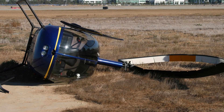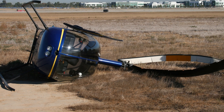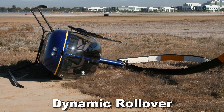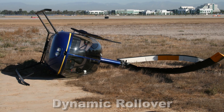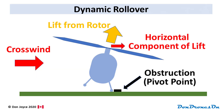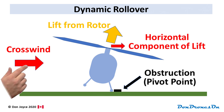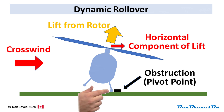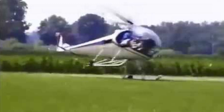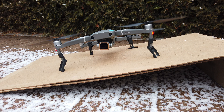The third helicopter hazard, which can also affect drones, is called dynamic rollover. Dynamic rollover occurs when something on the ground catches the skid or landing gear on one side, and sideways motion from — say — a crosswind causes the craft to rotate or tilt on the stuck pivot point. At some critical rollover angle, which can be as little as five degrees, the craft will quickly tip over.